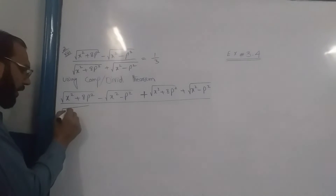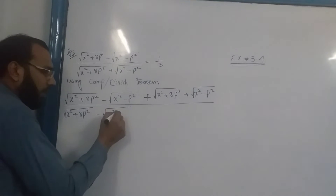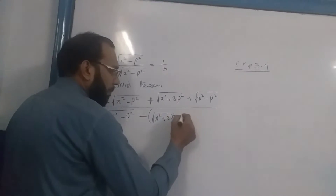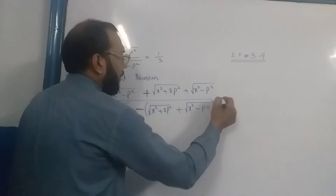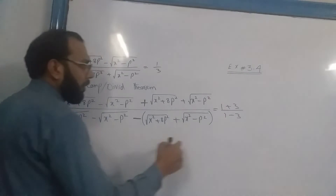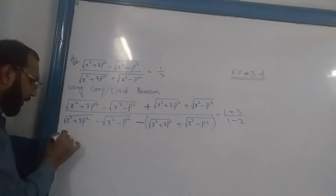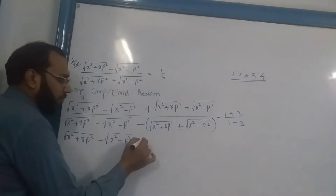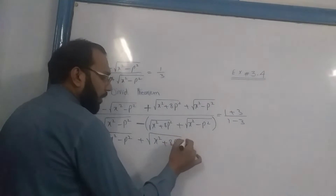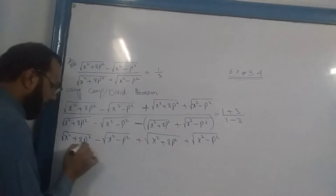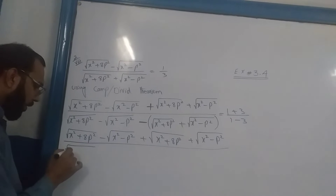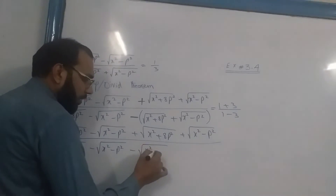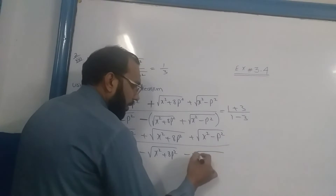Divided by: square root of (x² + 8t²) minus square root of (x² - t²), times (x² - t²). Then minus t² square root, square root of (x² + 8t²) plus square root of (x² - t²), equals (1+3) over (1-3). Using componendo dividendo, this part minus multiplied gives us x² + 8t², square root of (x² - t²), x² - t².